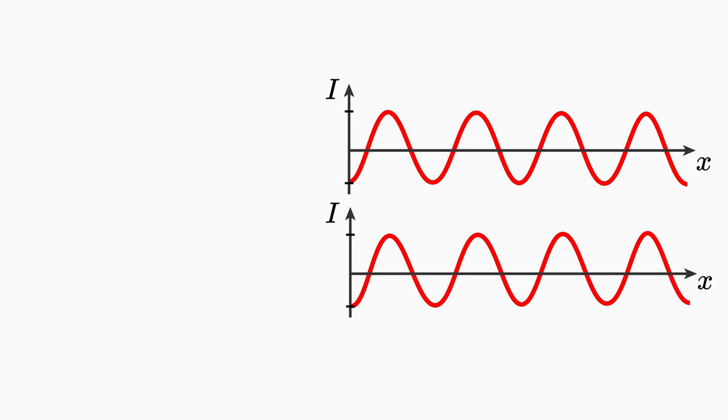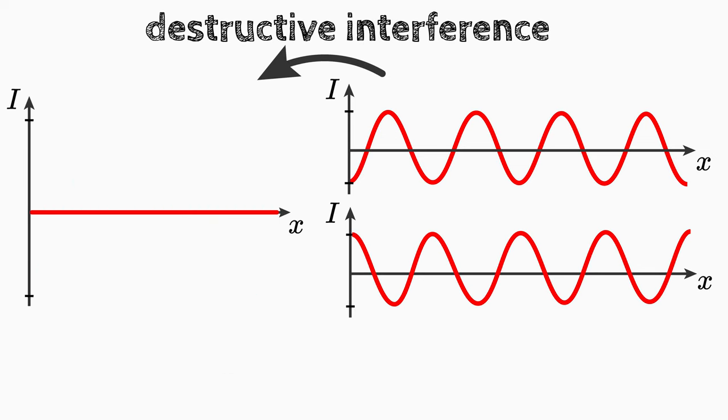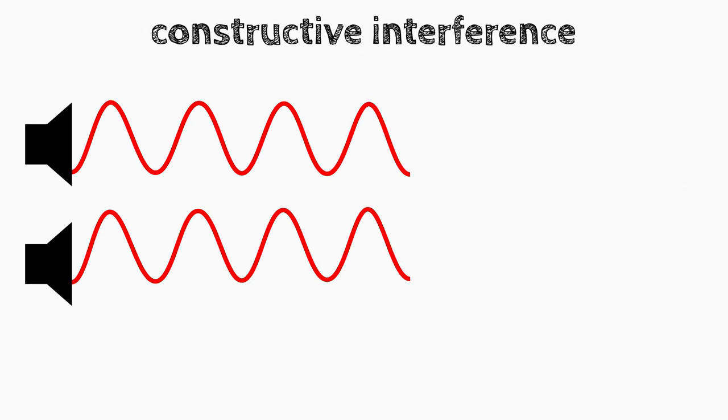The waves can interfere constructively or destructively. Constructive interference occurs exactly when the two identical waves have a path difference delta s that corresponds to a multiple of the wavelength, lambda.